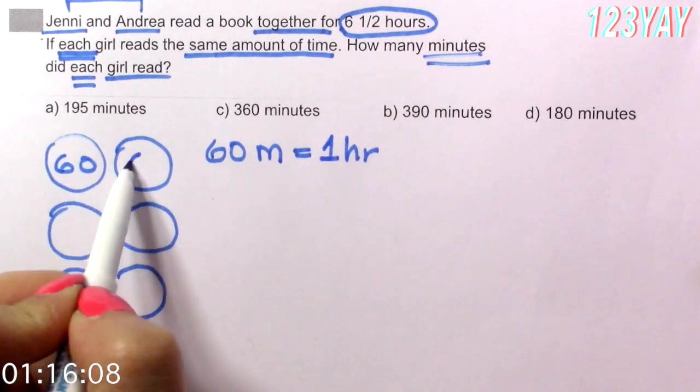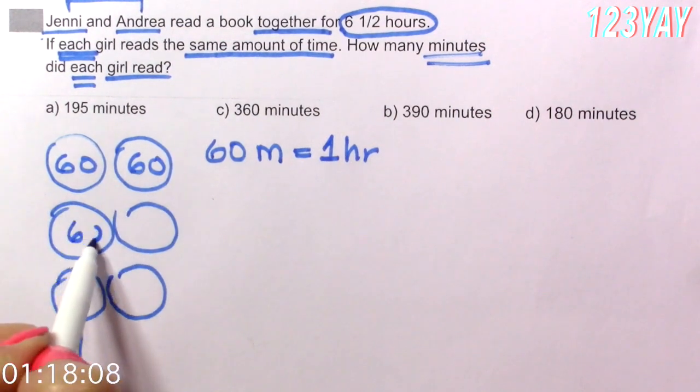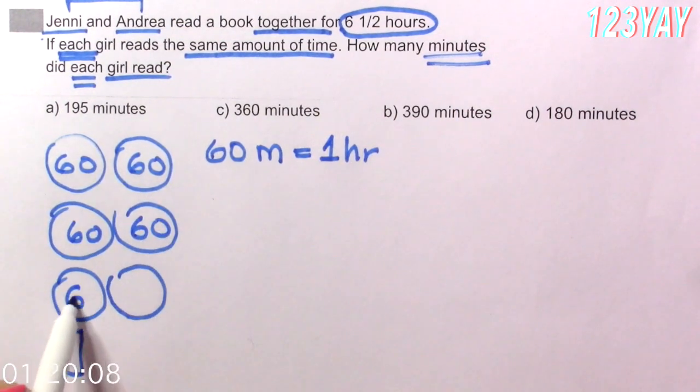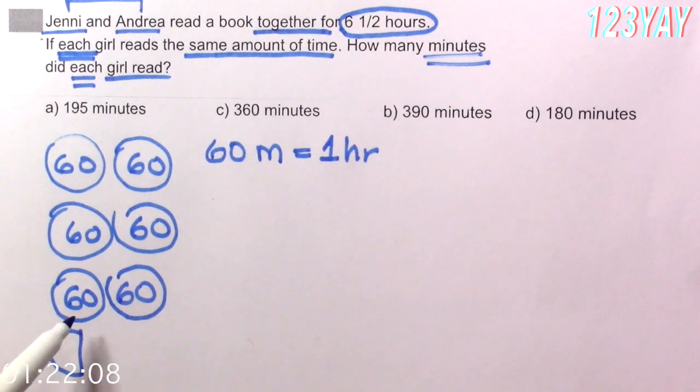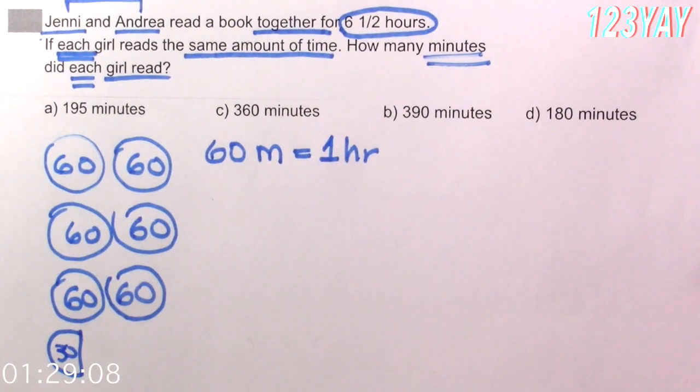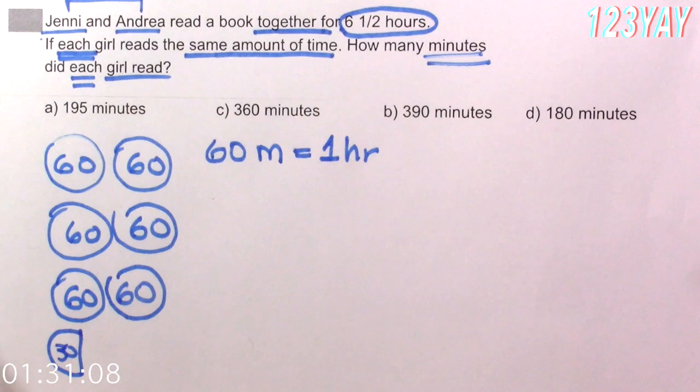Let's put 60, 60, 60, 60, 60, 60, 60, and half of 60 is 30. And we have to add all of this up. How do we do that in an easier way? Let's multiply 60 times 6 because these are 6 hours.